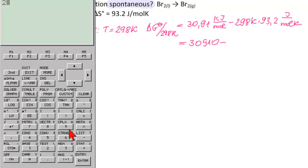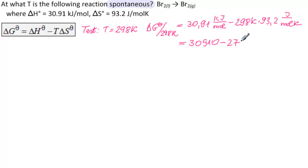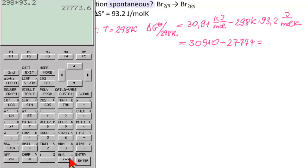And we need this multiplied, so 298 times 93.2. That's 27,774. So how much would that be? We need 30,910 minus that answer.